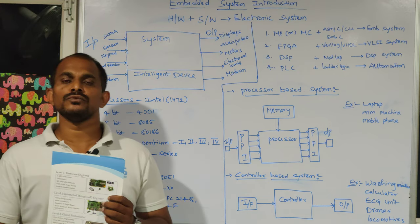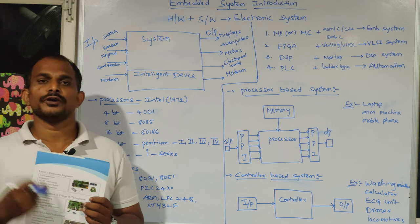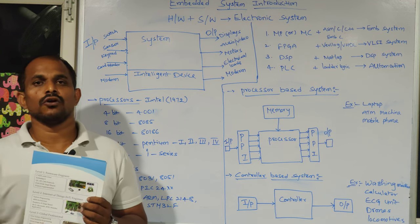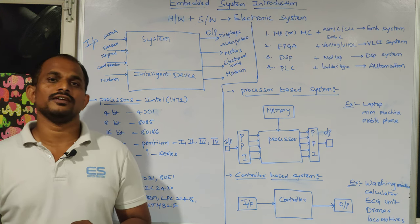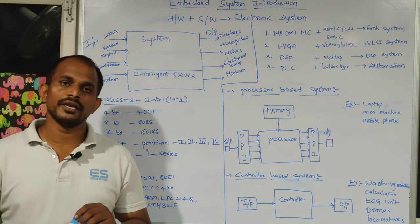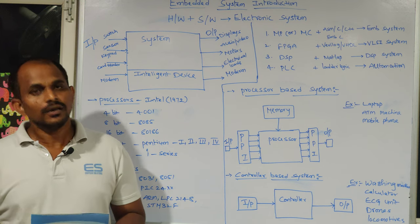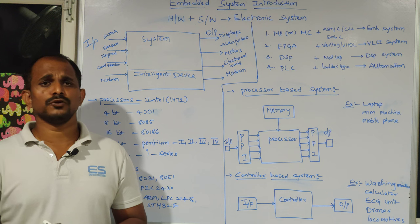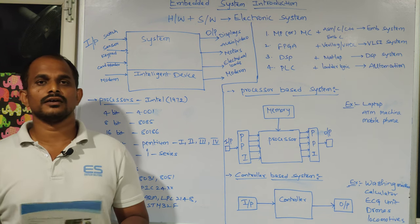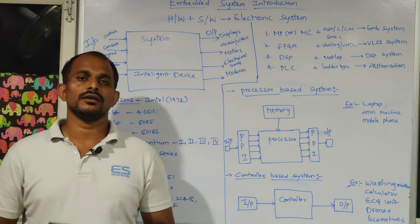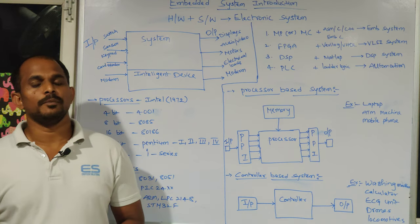We are adding one more domain — embedded automotive — which is emerging in current technologies. After level 1, candidates can move to the embedded automotive side, learning CAN protocol, UDS, and other basic requirements that the industry looks for. We are able to cover all four of these domains.